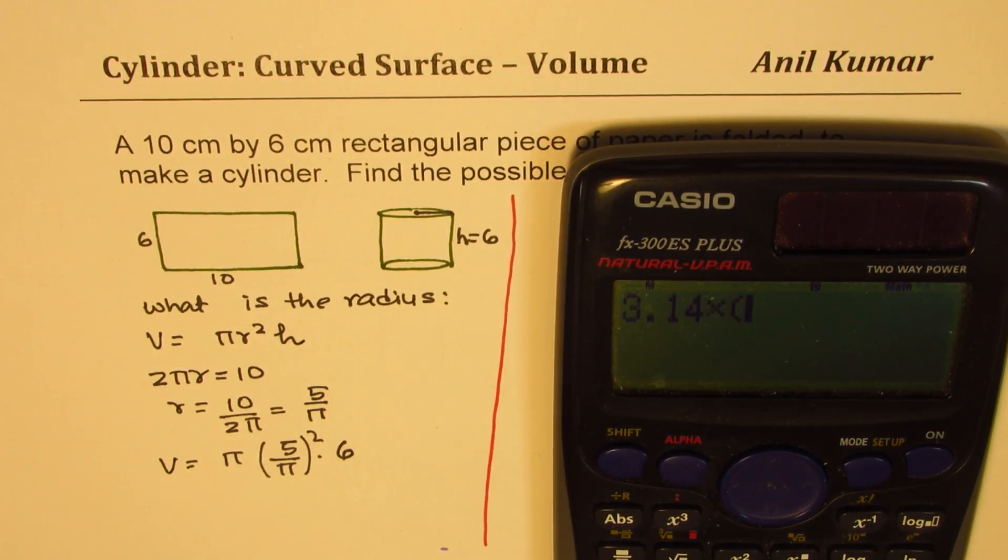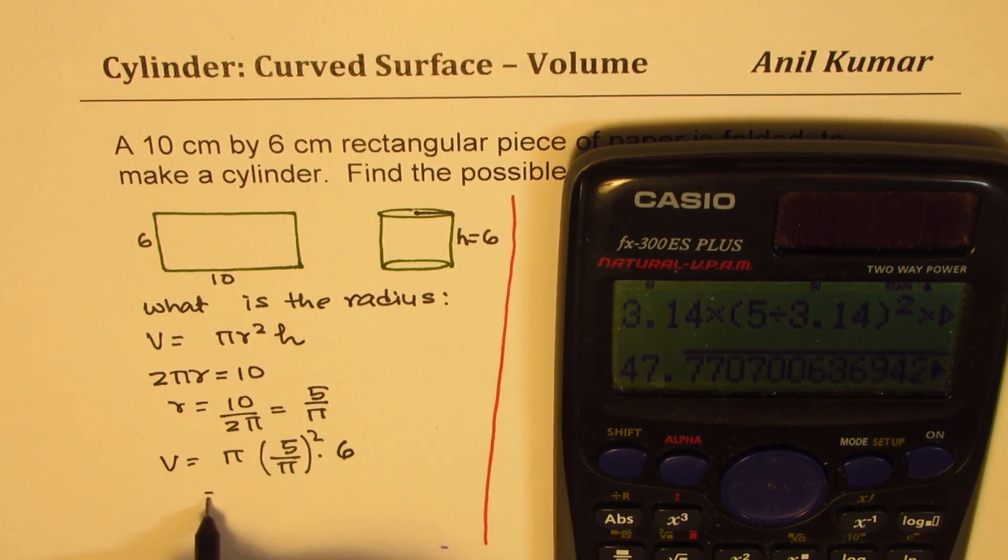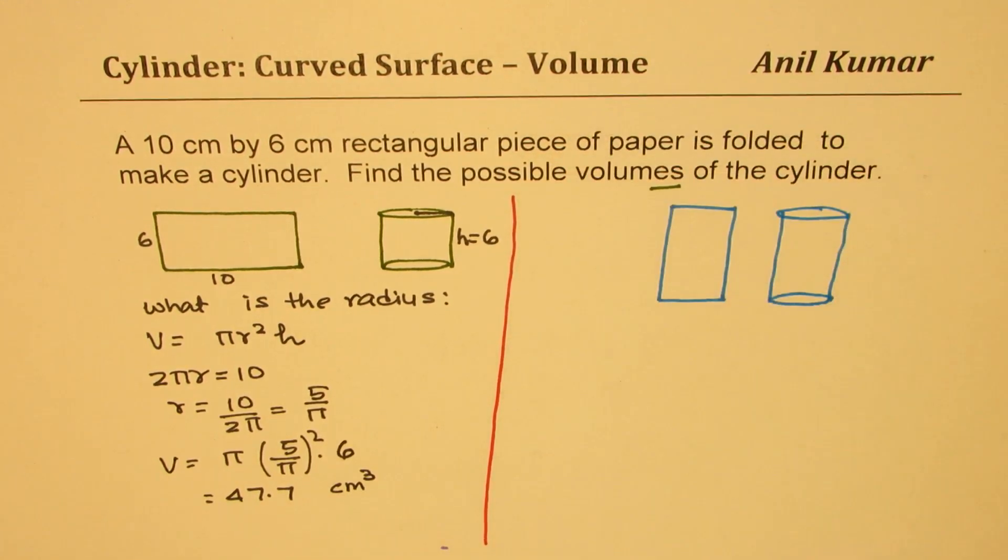So pi times, within brackets, 5 divided by 3.14 whole square, and then we have times 6. So that gives me, in decimals, let me write down, so 47.7. So that is what it gives me. 47.7. Okay, so that is the volume, and the units will be centimeter cubed. Perfect. So that is what I found.